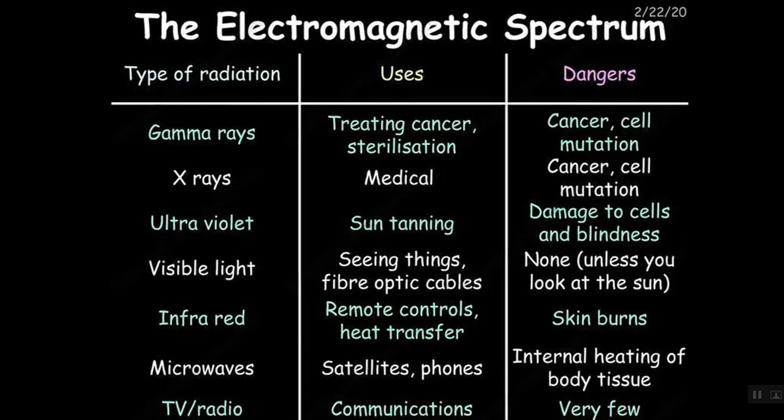Visible light is for seeing things and we use it for fiber optics. There's no dangers of the visible light colors except if you look directly in the sun that will damage your eyes once again. And then infrared, we use it for remote controls, we use it for heat transfer, but it can also burn your skin. Think of putting your hand above a fire - if you put it high enough it's still hot and that's how we use it to heat up or fry our meat.